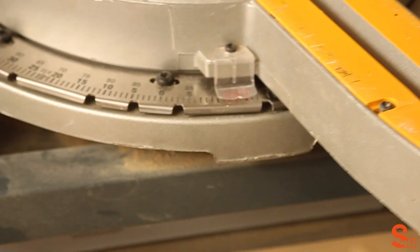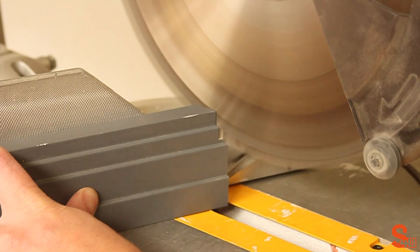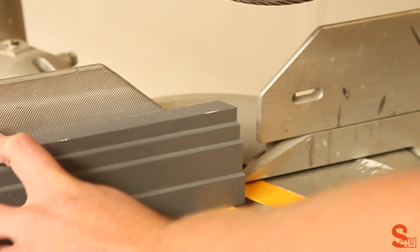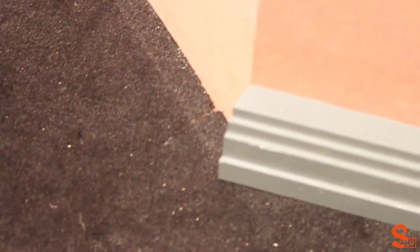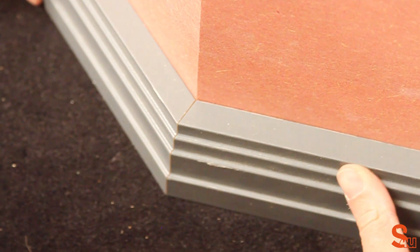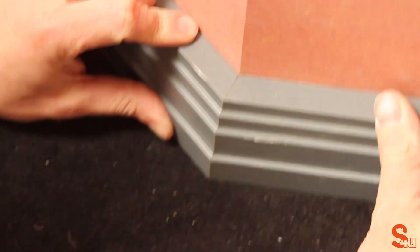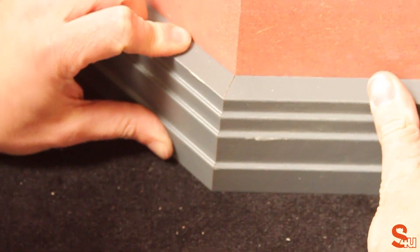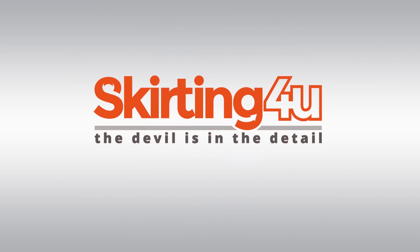Then set the opposite at 22.5 degrees. As you can see, putting them together makes the joint.